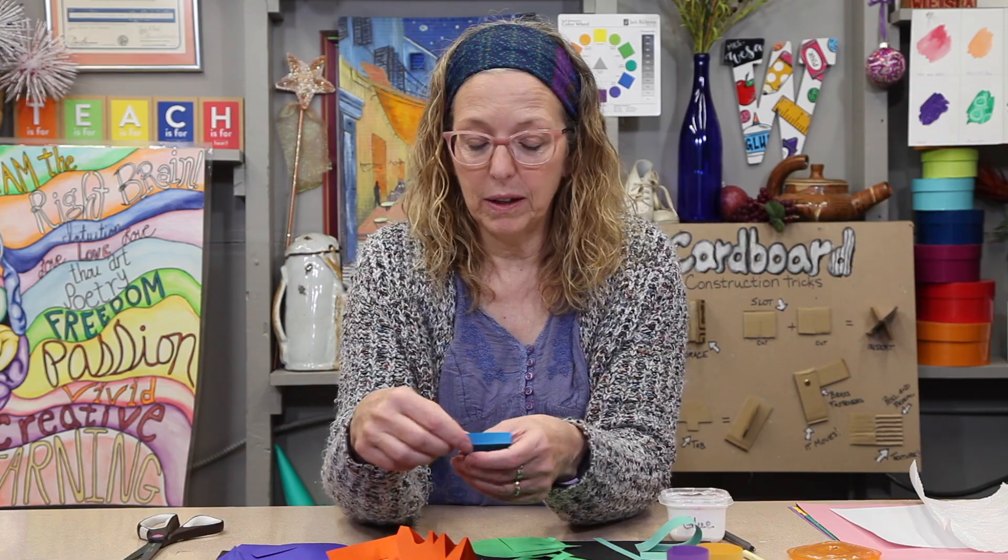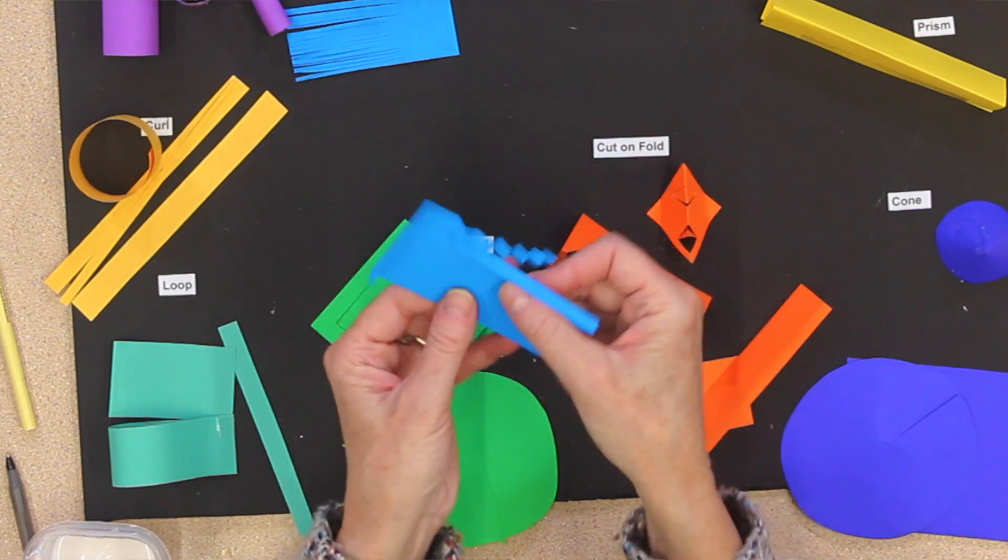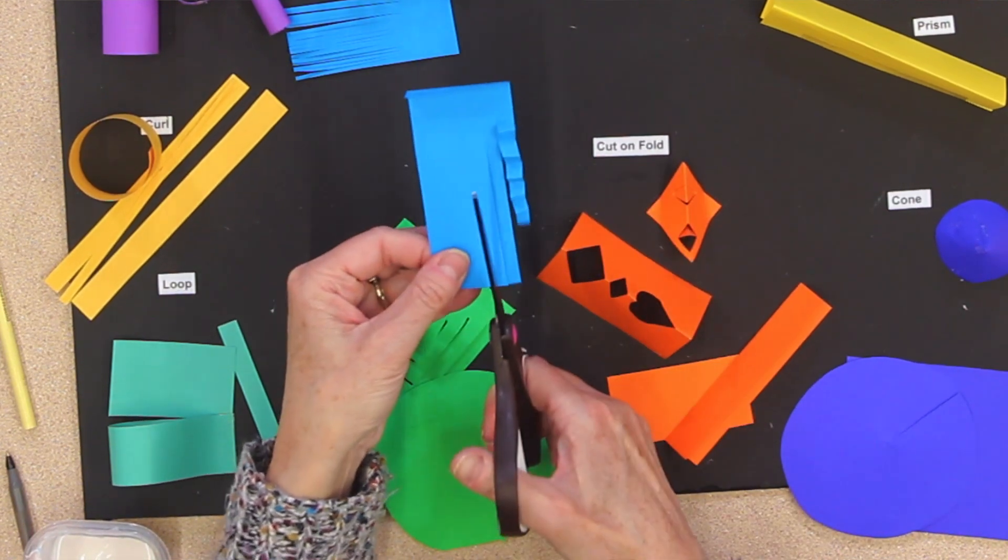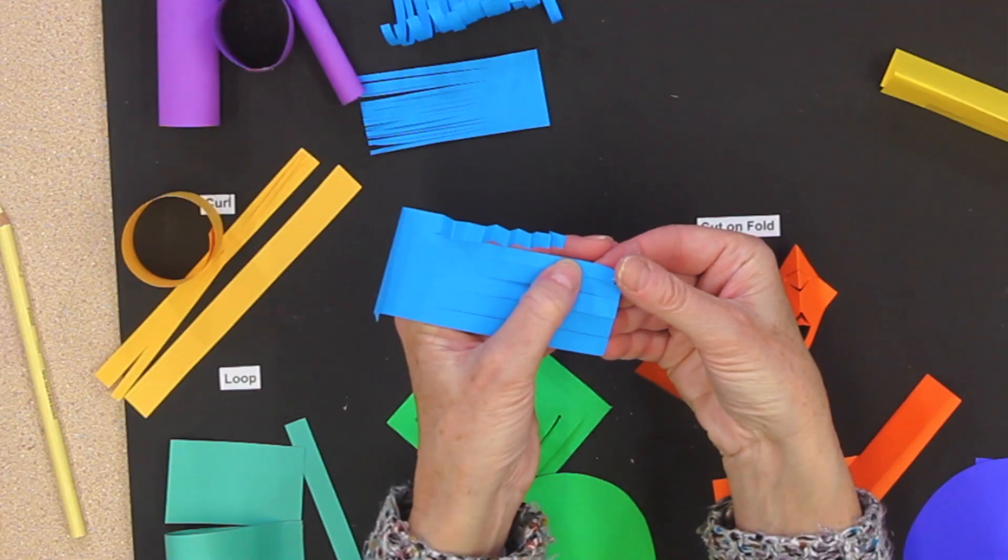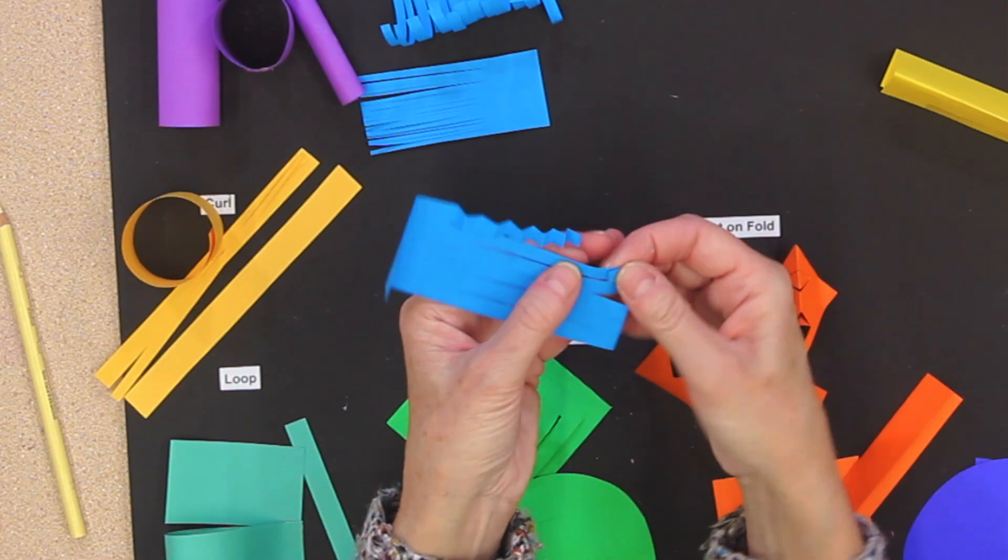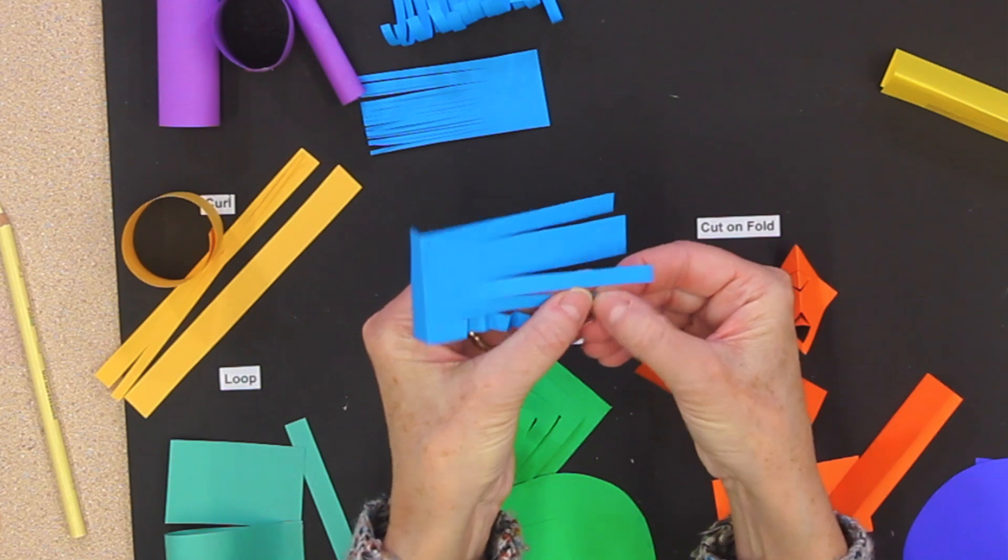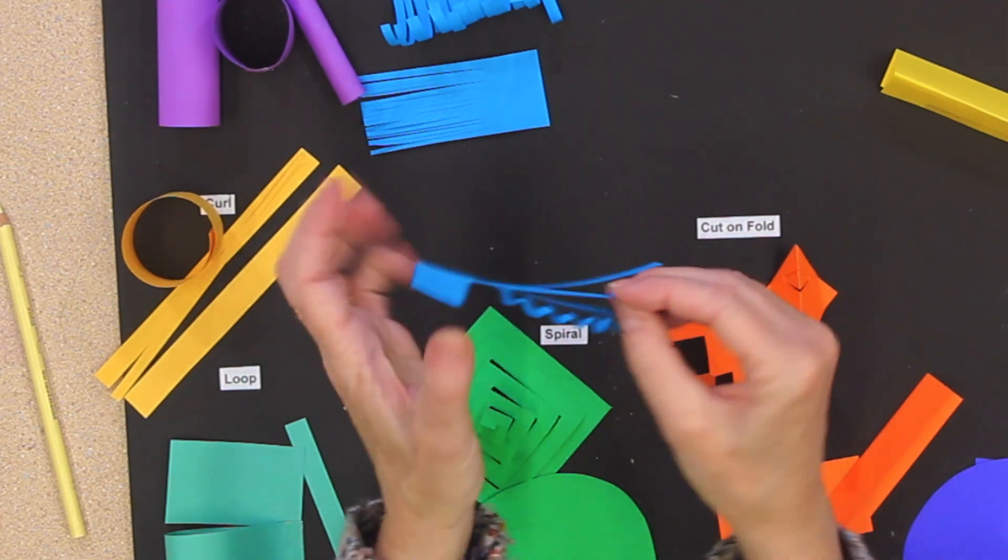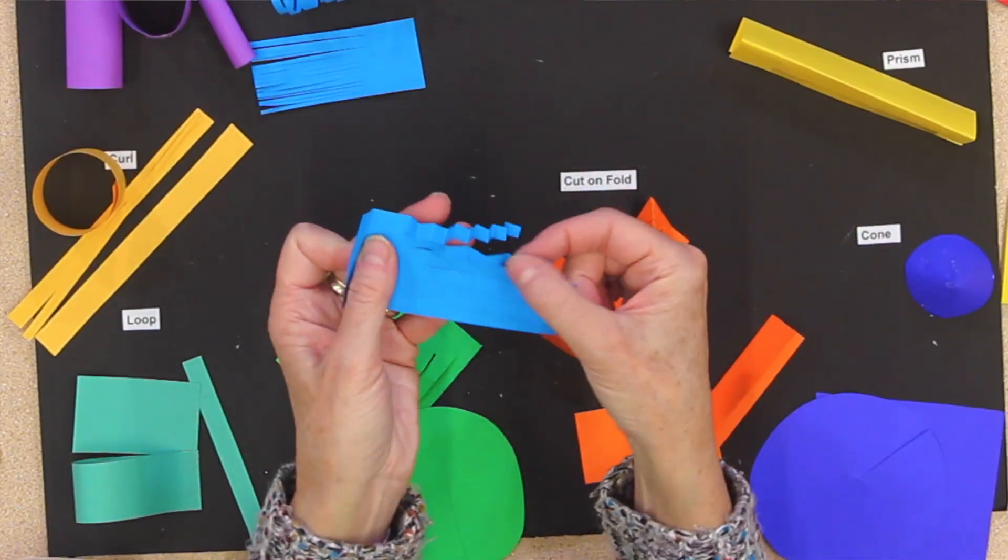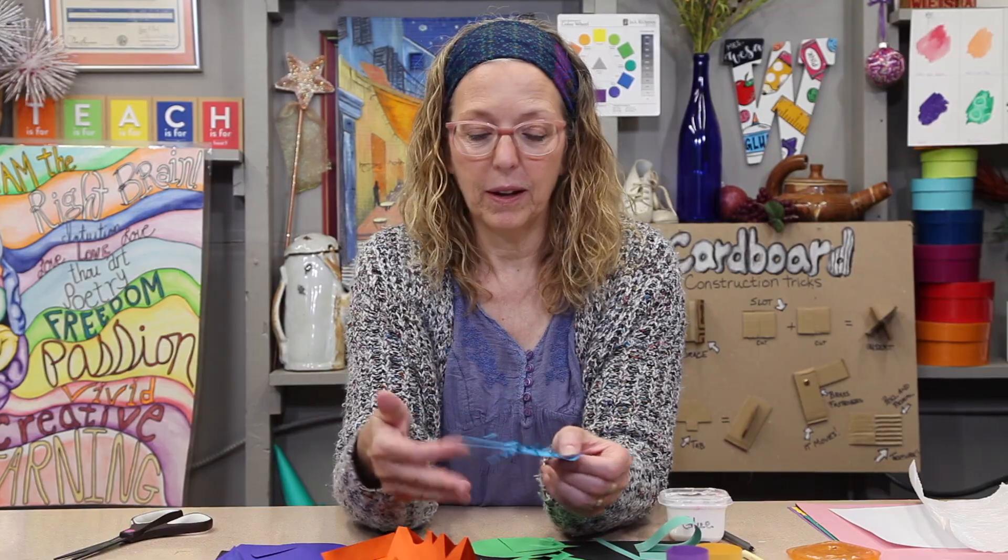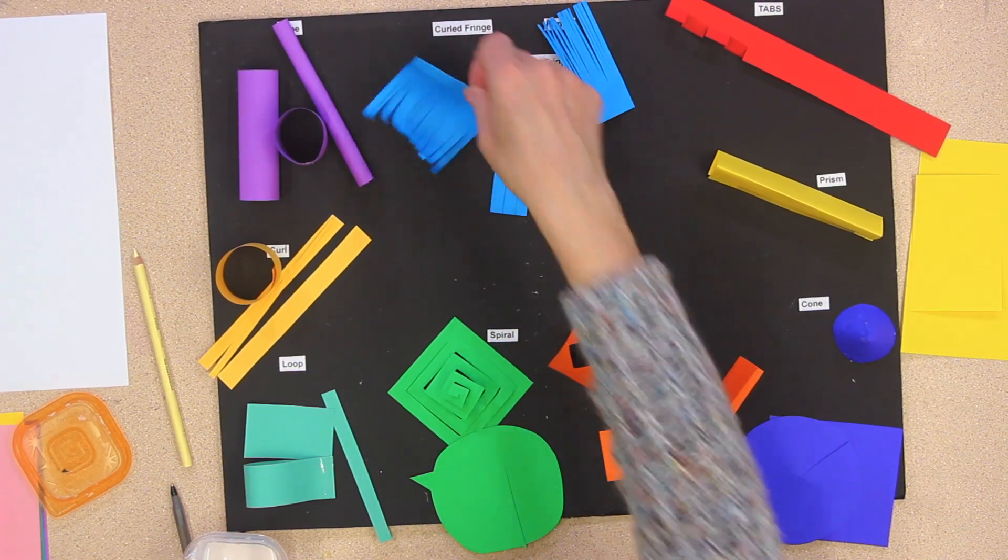Now this one is a pleated fringe. And all you do is, let's cut this paper here. So what you're doing is you're folding one way, and then turn it over, and fold it the other way. Back and forth. Like that. And you just keep going. So that's a pleated fringe.